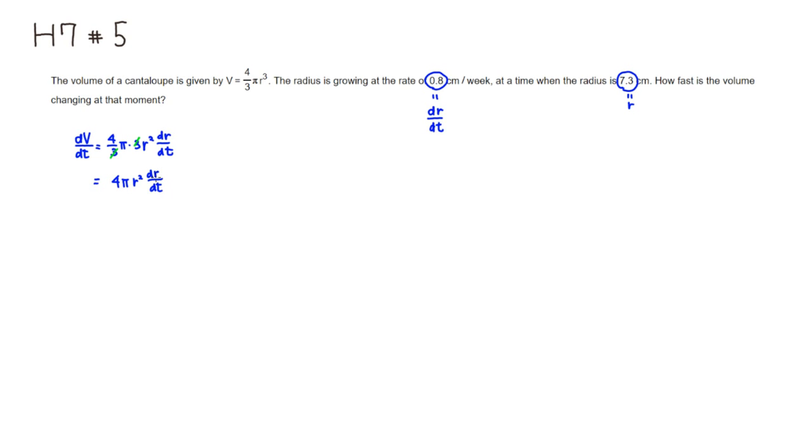Then we just have to plug in the given value. So here, at that moment, you're going to have - so 4 pi is just a fixed number, r is 7.3, so you have to square that. And also dr/dt is 0.8.